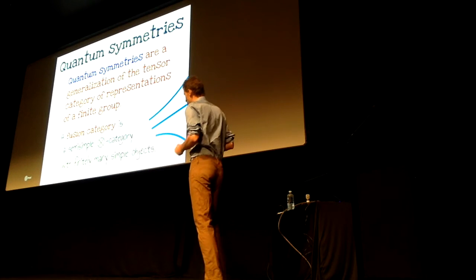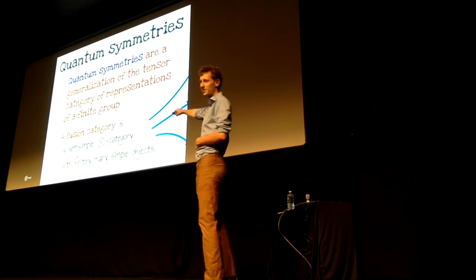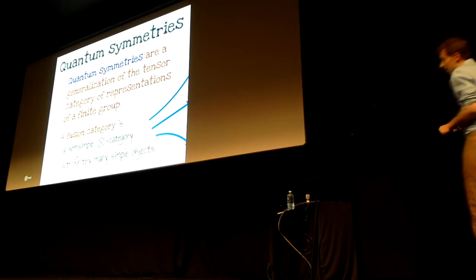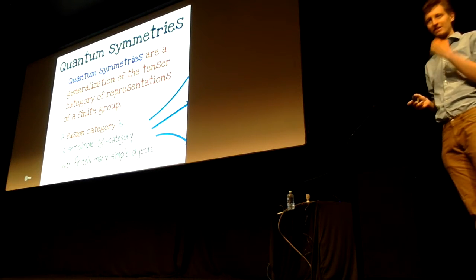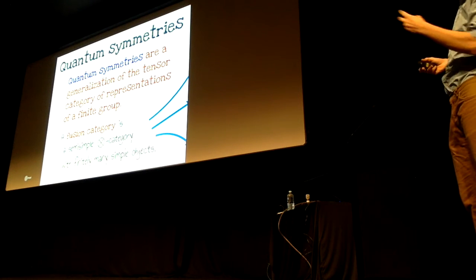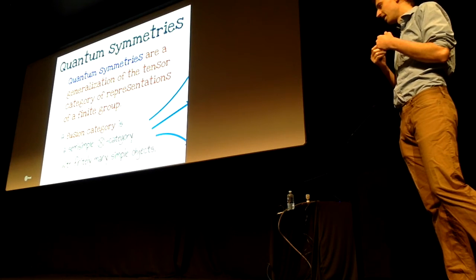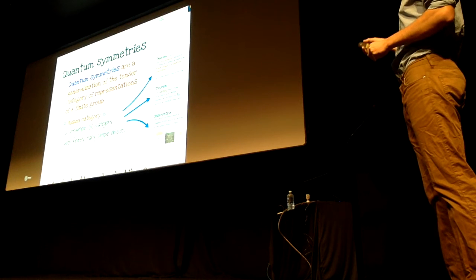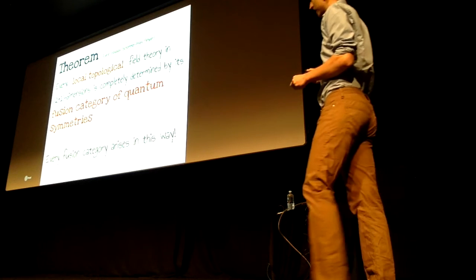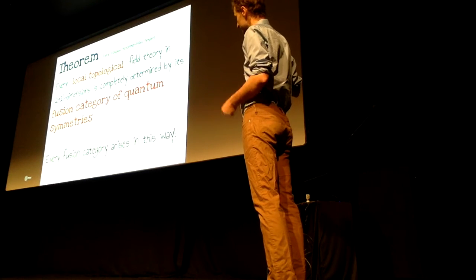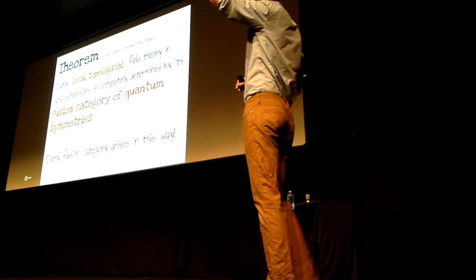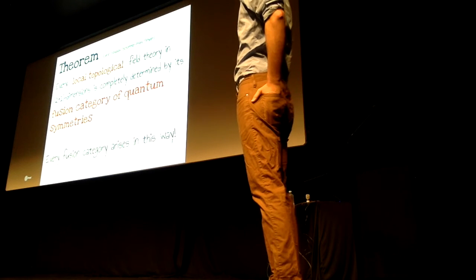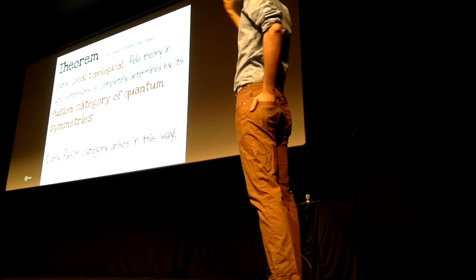Nothing in this talk is actually going to depend on knowing what any of the words in that definition mean — I'm just going to talk about them from the outside. My plan is to tell you three things about fusion categories: two smash-hit theorems and one observation that go a long way toward explaining why one should care about this class of mathematics. The first is a lovely statement combining general work by Lurie and a recent paper of Chris Douglas, Chris Schommer-Pries, and Noah Snyder. More or less, they say that every local topological field theory in 2+1 dimensions is completely determined by its fusion category of quantum symmetries.